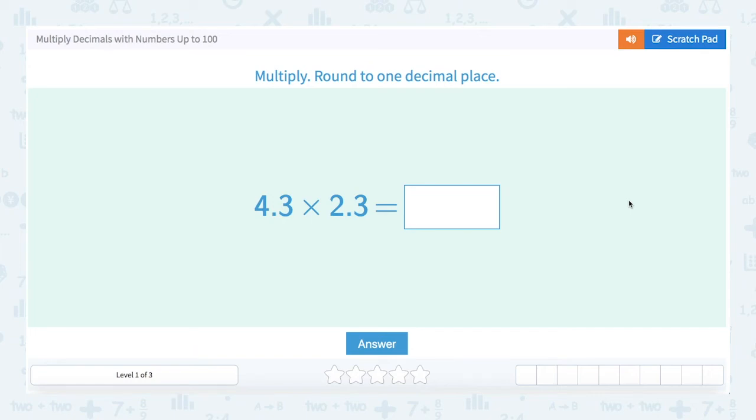Hello, welcome to another lesson. In this lesson we're going to multiply decimals using numbers up to 100. The first problem on the screen is 4.3 times 2.3.